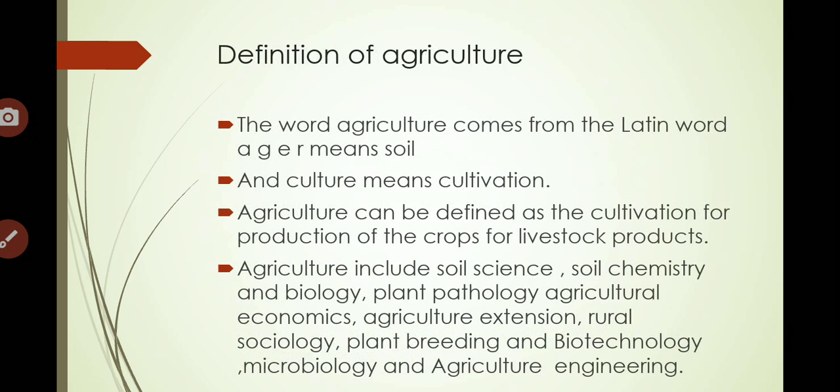Now we will look at the definition of agriculture. The word agriculture comes from the Latin word 'ager,' which means soil, and 'culture,' which means cultivation. So agriculture can be defined as the cultivation and production of crop plants or livestock products. This is the exact definition of agriculture.